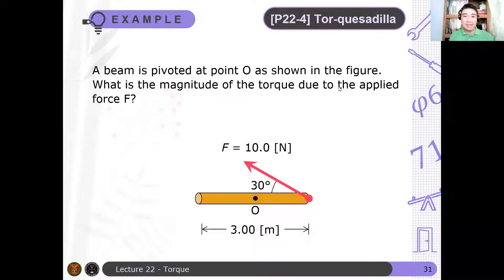So let's have another example, torque yasadilya. I'm not going to use up the sulat neto. A beam is pivoted at point O as shown in the figure. What is the magnitude of the torque due to the applied force F?